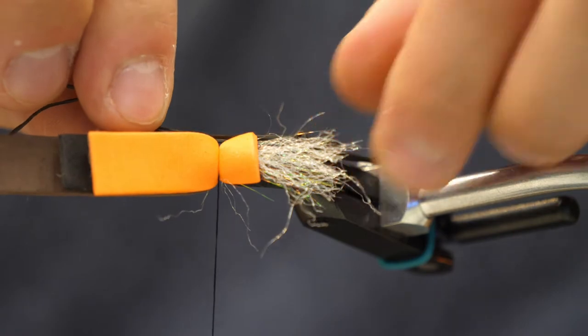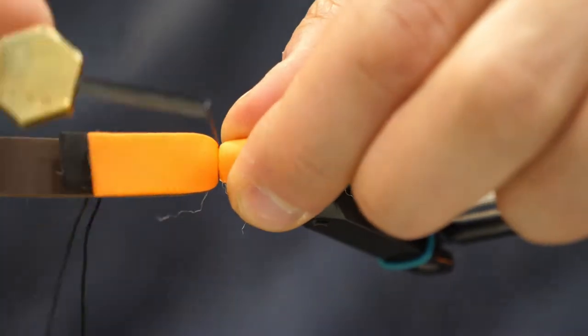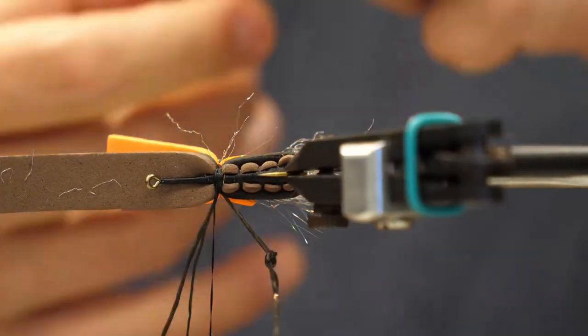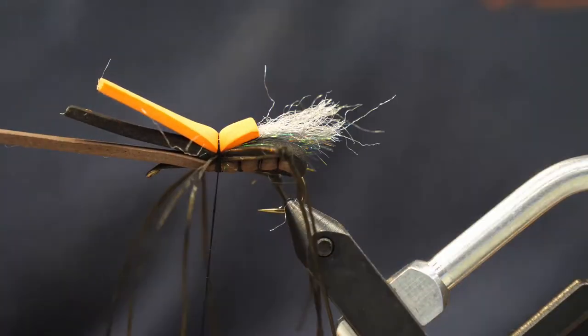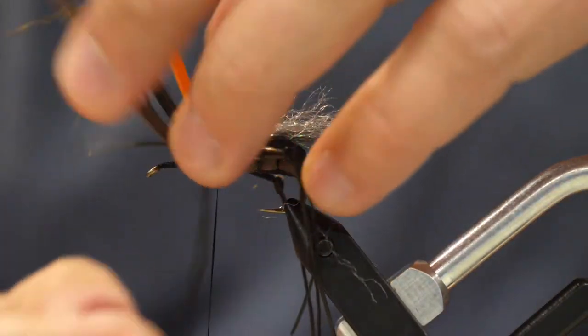Alright, rubber legs time, and I've just taken two strands. I've tied a simple overhand knot, and it puts a kink in it to make it look like a hopper's leg. I'm going to tie that to both sides and get the knot so that it's the same distance as the butt section on this fly.